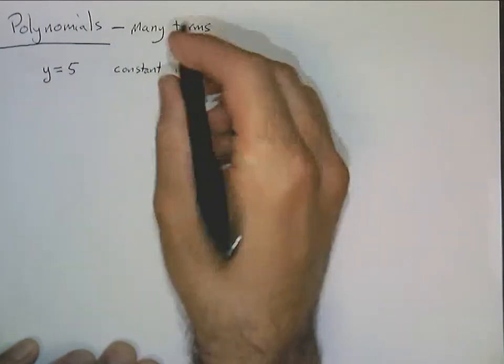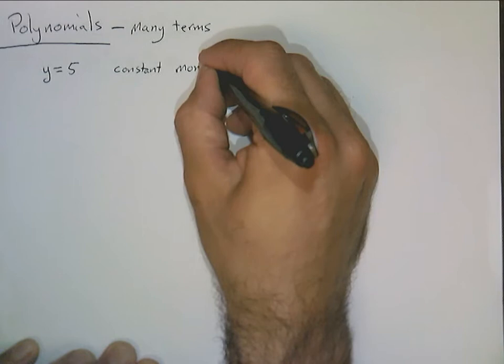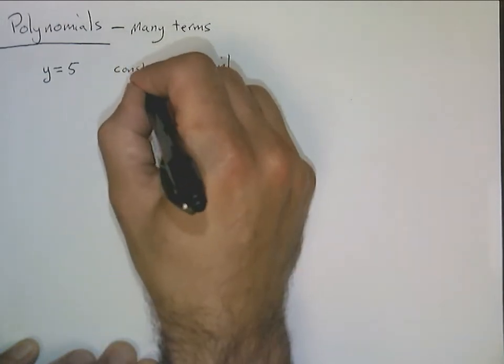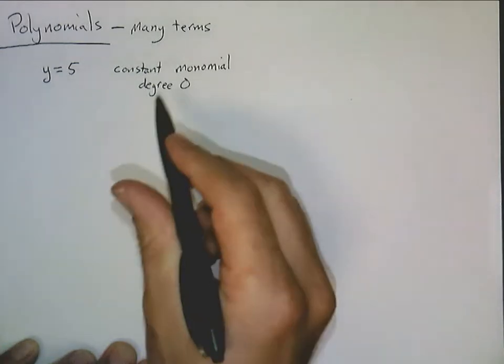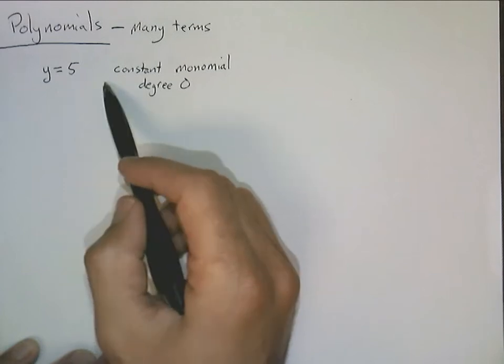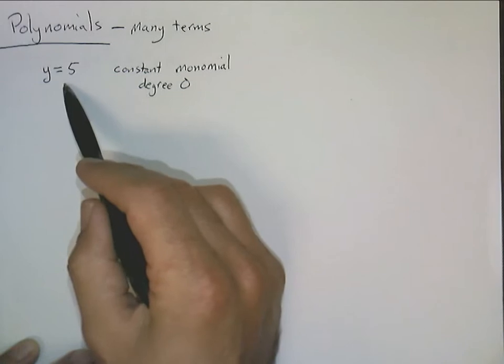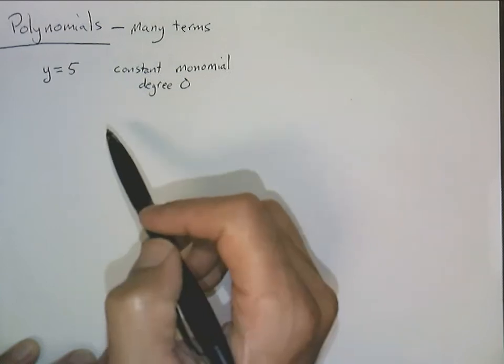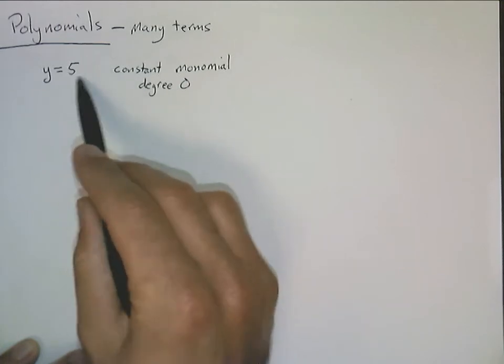And actually, since it only has one term in it, the prefix mono means one. So this is called a constant monomial. We also say that this thing has degree zero. And there are some notes up on the website if you want to look at those. Degree zero, the degree of a polynomial is really just the highest power of x that you see in the equation, or the expression if we're just talking about an expression here. But we're looking at polynomial functions. So y equals 5. We could think of this as putting 5 times x to the power of 0, because anything to the power of 0 is just 1. So really the highest power of x that you see on this right hand side is 0.